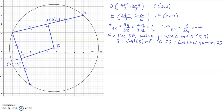Similarly, we have to do the same procedure for the chord AB and the perpendicular bisector to that chord, EF. The gradient of AB equals the change in y-coordinates over the change in x-coordinates, giving minus 3. Therefore, the gradient of EF is the negative reciprocal of minus 3, which gives one third.